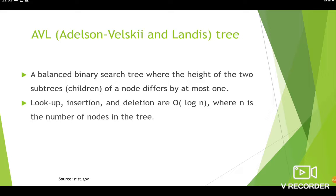What is AVL tree? AVL tree is named after Adelson, Welsky and Landis, because it was invented by them. It is a balanced binary search tree where the height of the two subtrees — the left subtree and the right subtree of a node — differs by at most 1. The main advantage is you can easily search an element in AVL tree in order of O(log n) time. Similarly, you can perform insertion and deletion operations within O(log n) time, where n is the number of nodes in the tree.